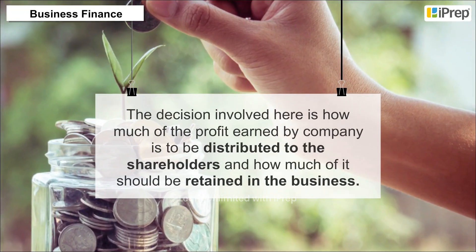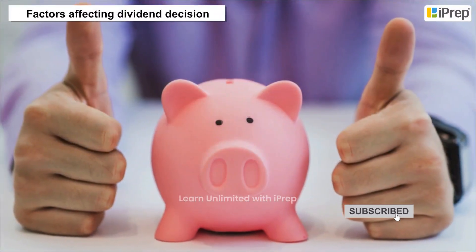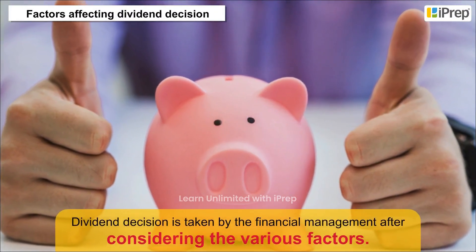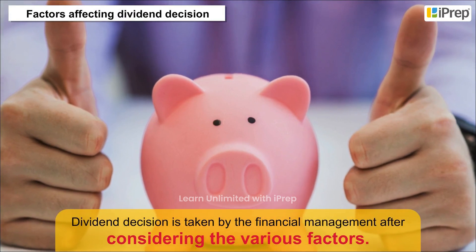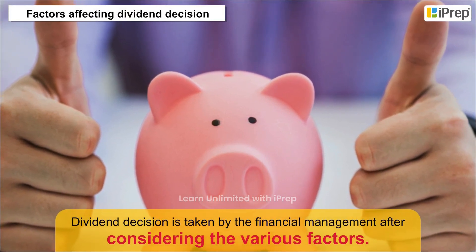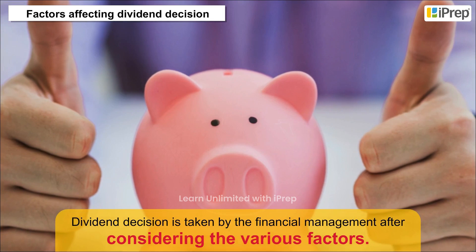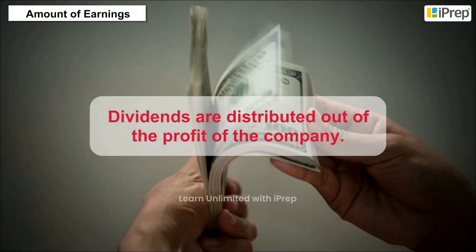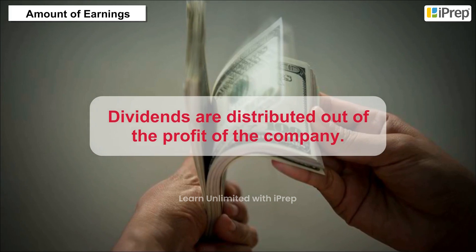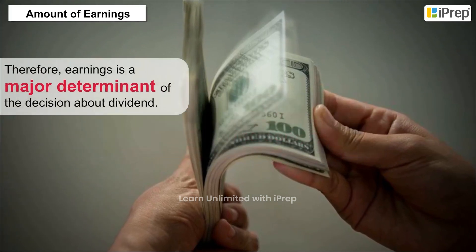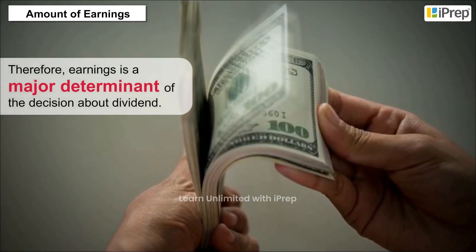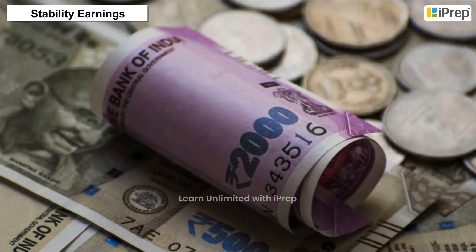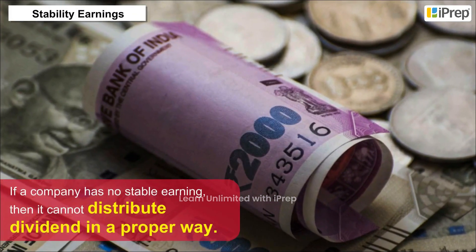Factors affecting dividend decision: the dividend decision is taken by the financial management after considering various factors. The important ones are discussed below. Amount of earnings: dividends are distributed out of the profit of the company, therefore earnings is a major determinant of the dividend decision.